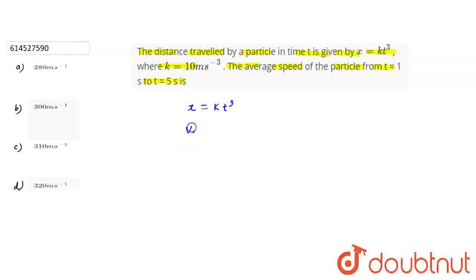So guys, if we talk about average velocity, what is average velocity? Average velocity is defined as change in position, that is delta x, divided over delta t.